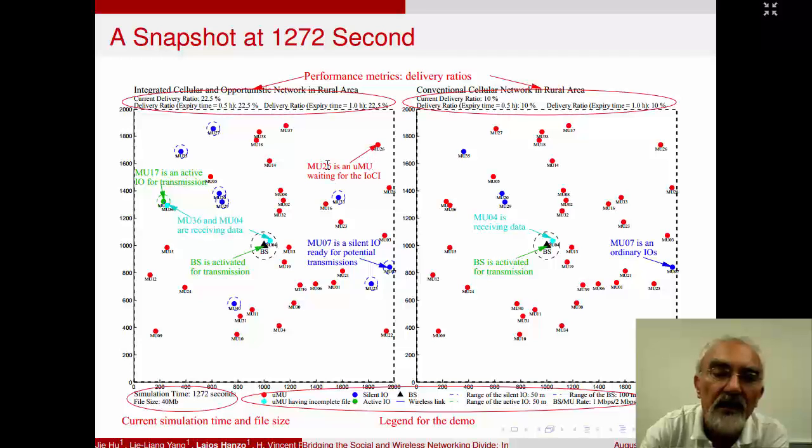And so at this stage, you can see that mobile user 36 and mobile user 4 are receiving the data, corresponding to this light blue color. And perhaps just to indicate here also another scenario, mobile user 26 is a hitherto unserved mobile user, waiting for the information of common interest. On the right-hand side, we have the conventional cellular network. And mobile station 4 is receiving the information, the base station is activated for transmission.